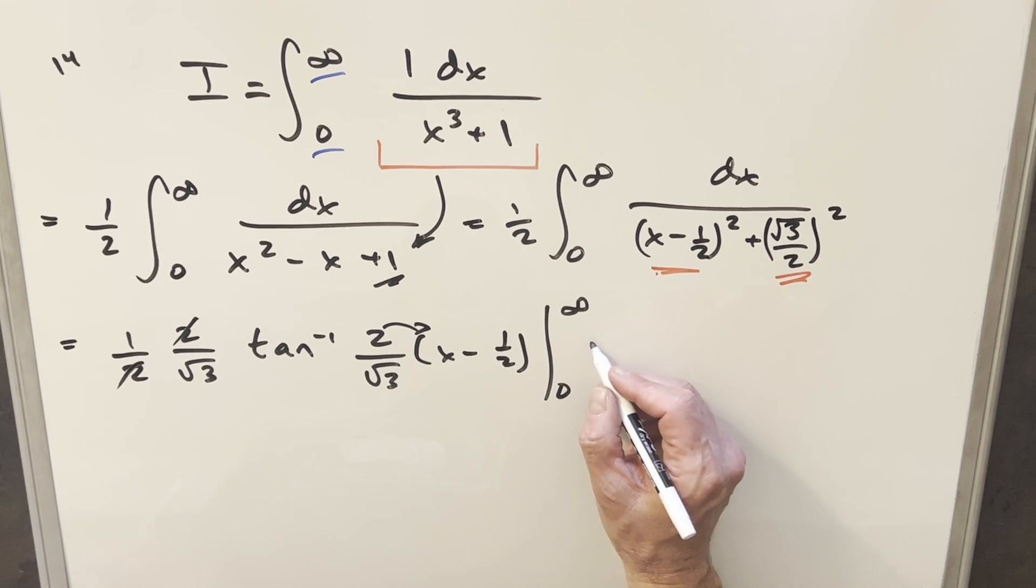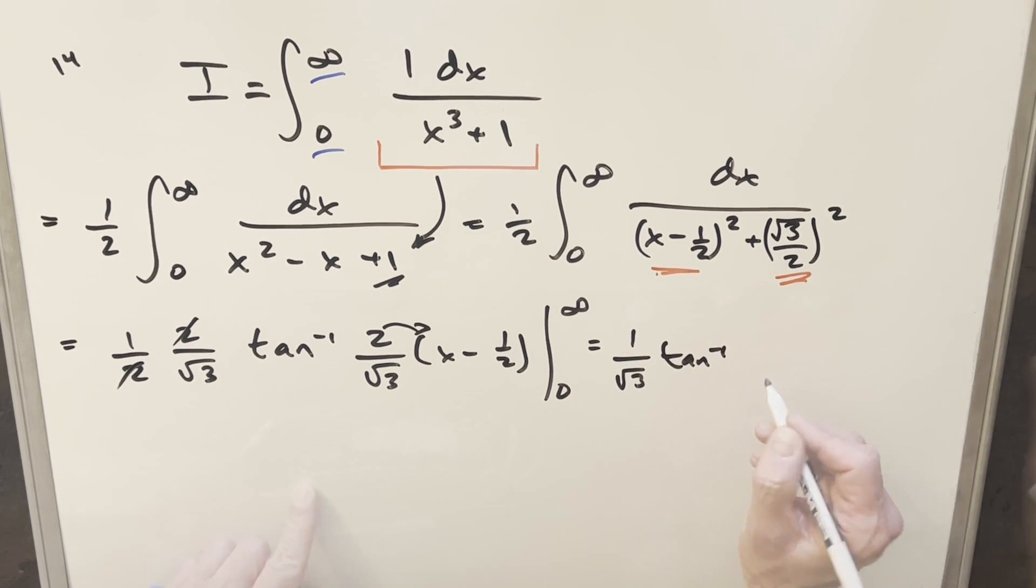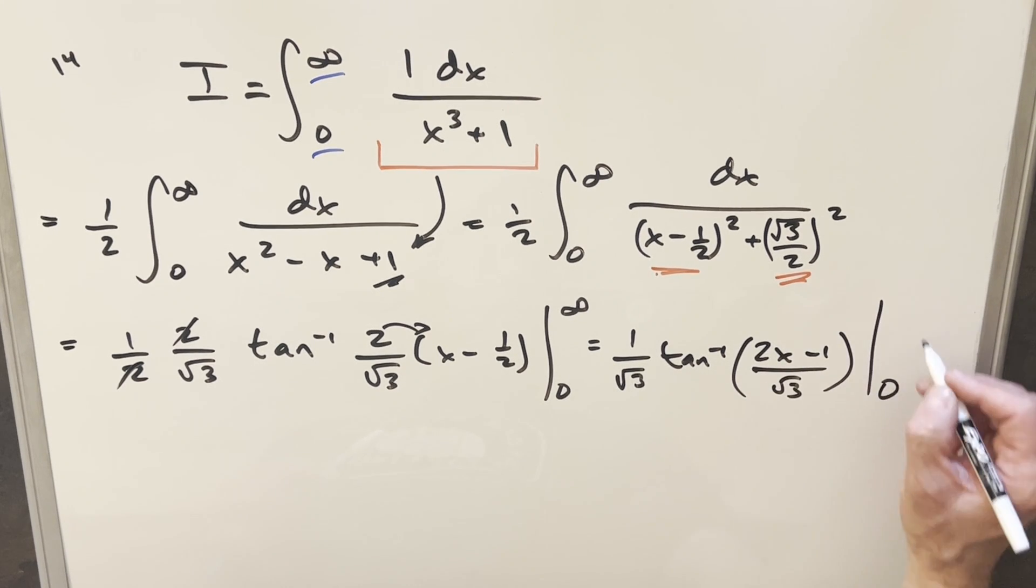And I can distribute in this too. So when I rewrite this, what we're looking at is 1 over square root of 3 Arctan. And multiplying in this 2, we get 2x minus 1 over square root of 3. And we just need to evaluate from 0 to infinity.